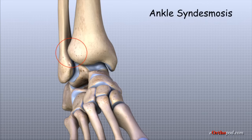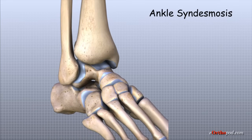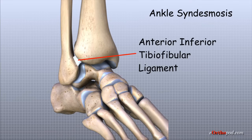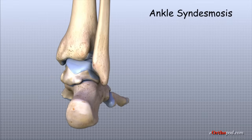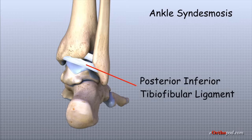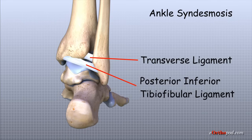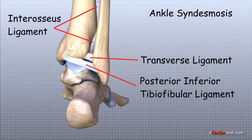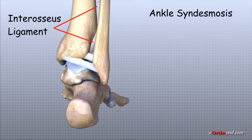Three main ligaments form the syndesmosis. The anterior inferior tibiofibular ligament connects the tibia to the fibula and crosses above the front of the ankle. The posterior fibular ligaments connect the tibia and fibula behind the ankle joint, and include the posterior inferior tibiofibular ligament and the transverse ligament. The interosseous ligament lies immediately between the tibia and fibula — interosseous means between bones — and is a long sheet of connective tissue that connects the entire length of the tibia and fibula from the knee to the ankle.